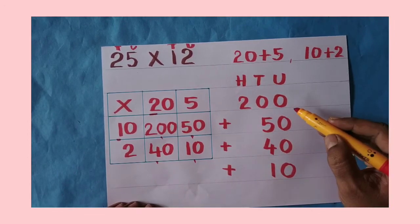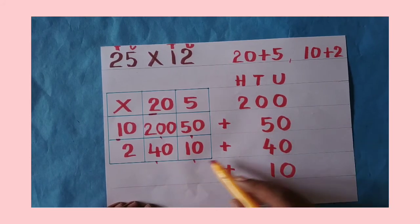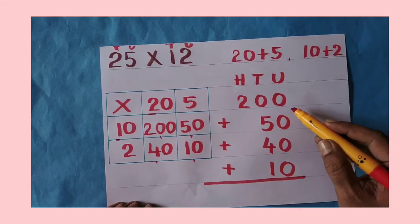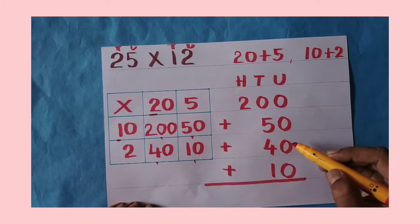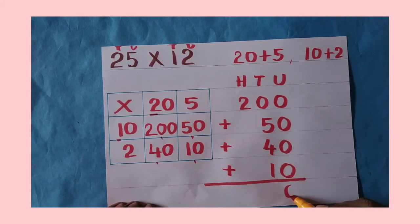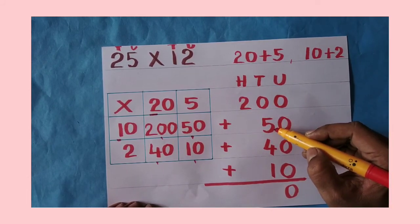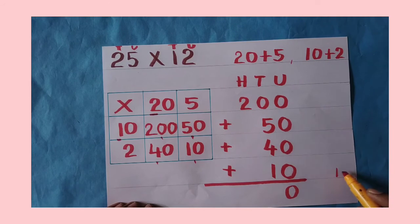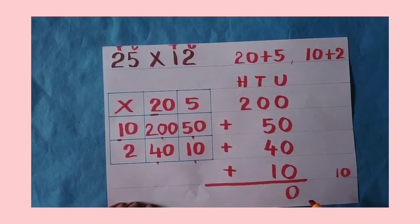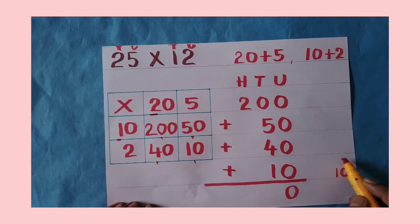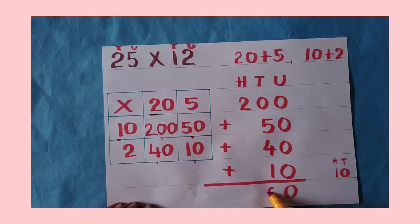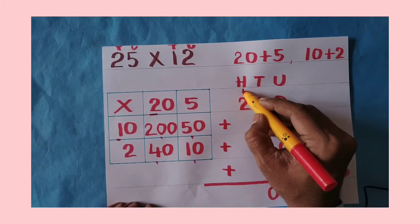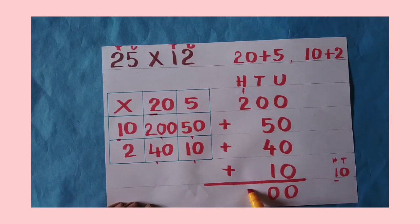Okay, properly check: 200, 50, 40, then 10. Add all of these. 0 plus 0 is 0. 0 plus 5 is 5. 5 plus 4 is 9. 9 plus 1 is 10. So you have to carry 1 to tens place and it is in the 100 place. So you have to write 0 and carry 1 to tens place. 1 plus 2 is 3.